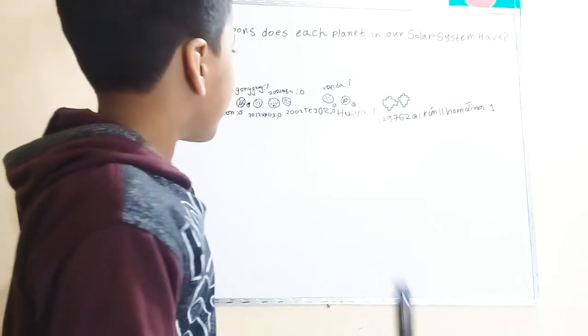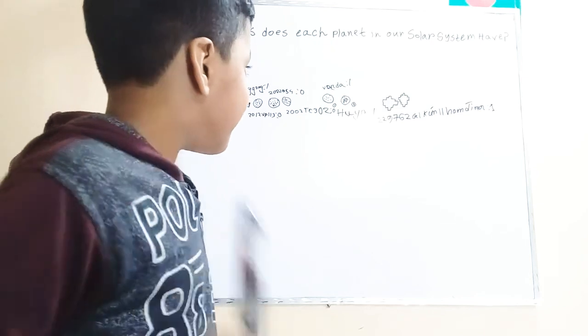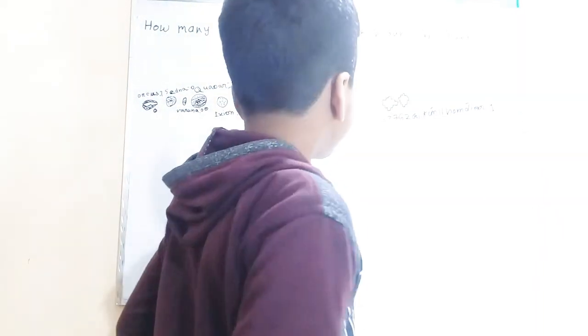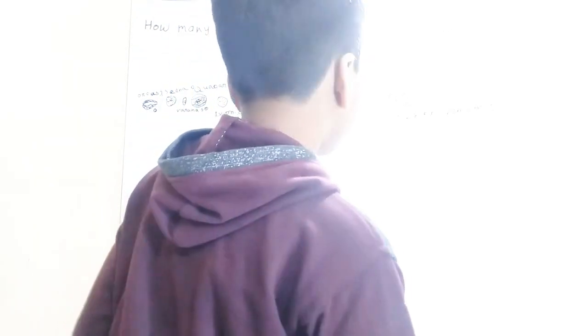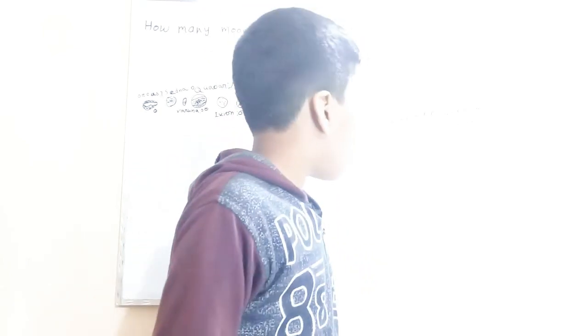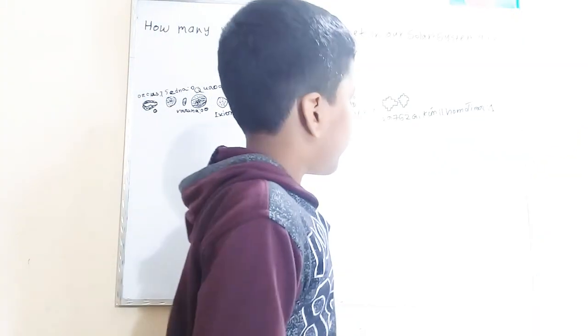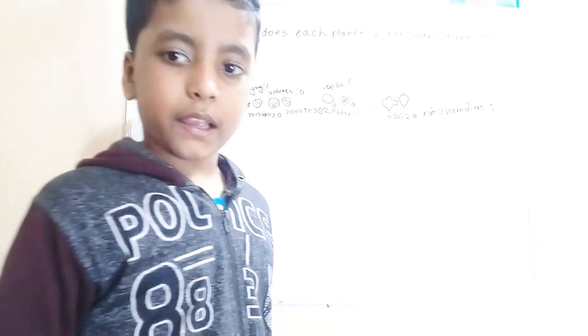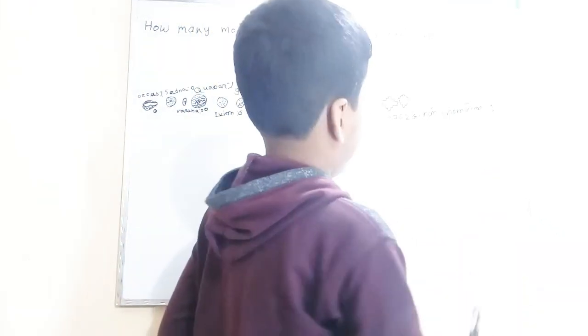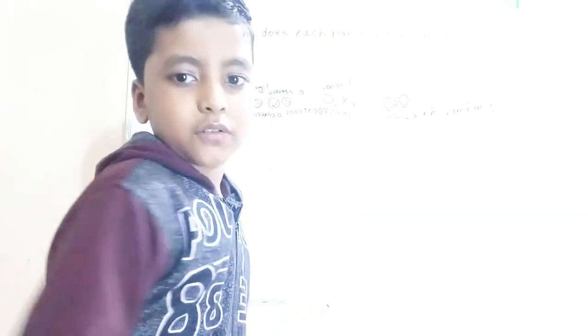And Varda has one moon. Huya has one moon, and 229762 G!kún||'hòmdímà has one. And that one stands for that it has one moon, but it's not a name, a part of its name. I just wrote it.